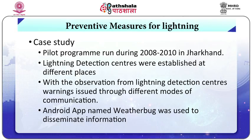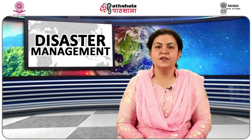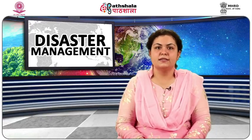With observations from lightning detection centers, on-time warnings were issued through various means such as hooters, SMSs, mails, television, radio, and agromet advisories. An Android app named Weather Bug was also used to issue 30 minutes to 3 hours advance warning against lightning. This was a significant step towards avoiding lightning risks.